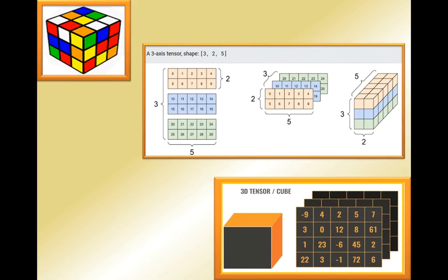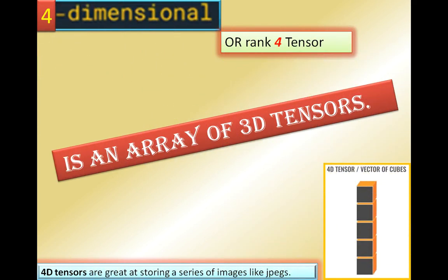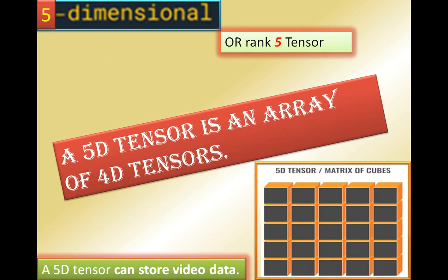A four-dimensional or rank-four tensor is an array of 3D tensors. 4D tensors are great at storing a series of images like JPGs. A 5D tensor can store video data — it is used for storing video data.